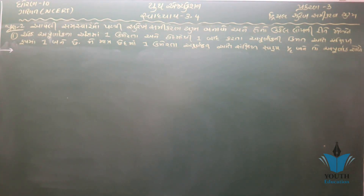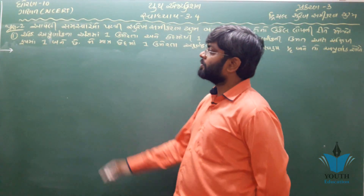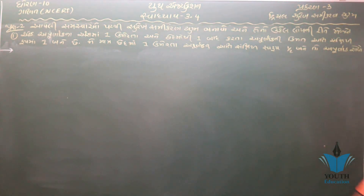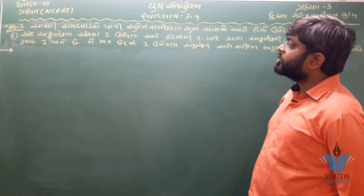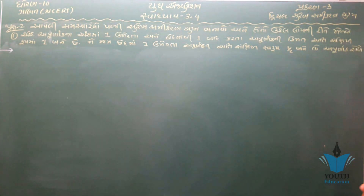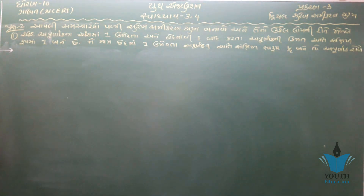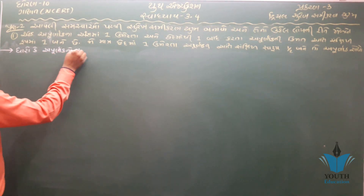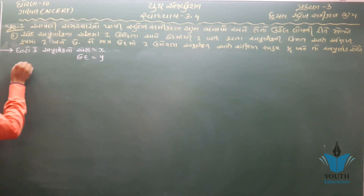બાણસમાં એક ઉમેરવામાં આવે ને છેદમાં એક બાદ કરવામાં આવે તો તે અપૂર્ણાંકની કિંમત નો અર્થ સંક્ષિપ્ત સ્વરૂપ — [If 1 is added to the numerator and 1 is subtracted from the denominator of a fraction, the simplified value of that fraction is discussed.]